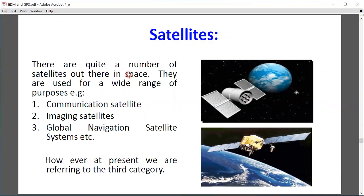There are quite a number of satellites out in space used for a wide range of purposes. For example, communication satellites, imaging satellites, and global navigation satellites. At present, we are referring to the third one, global navigation satellites.